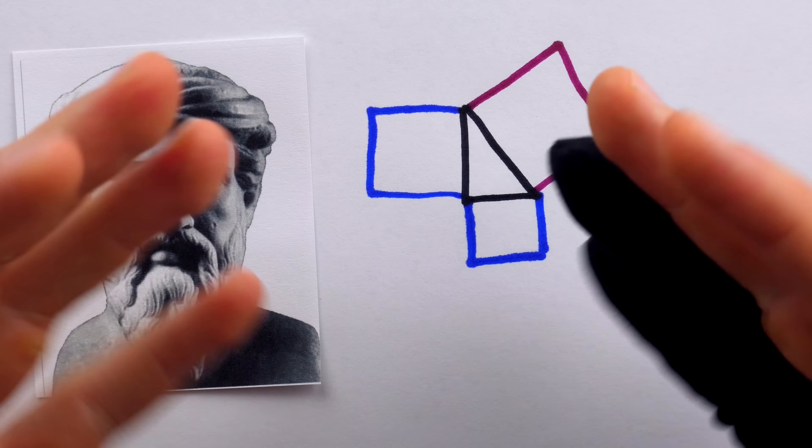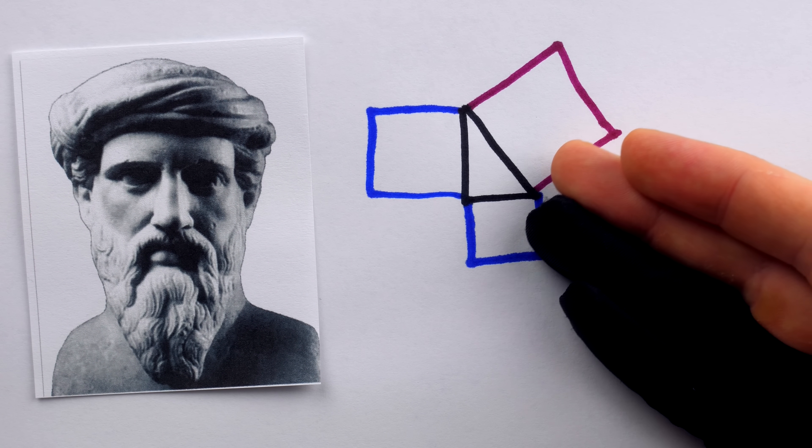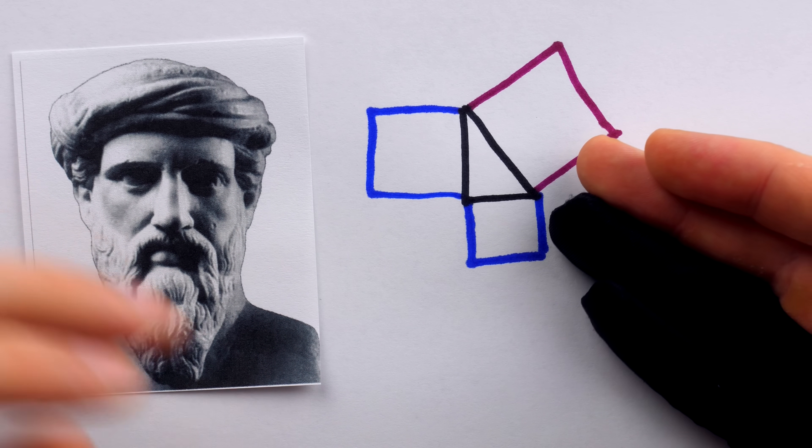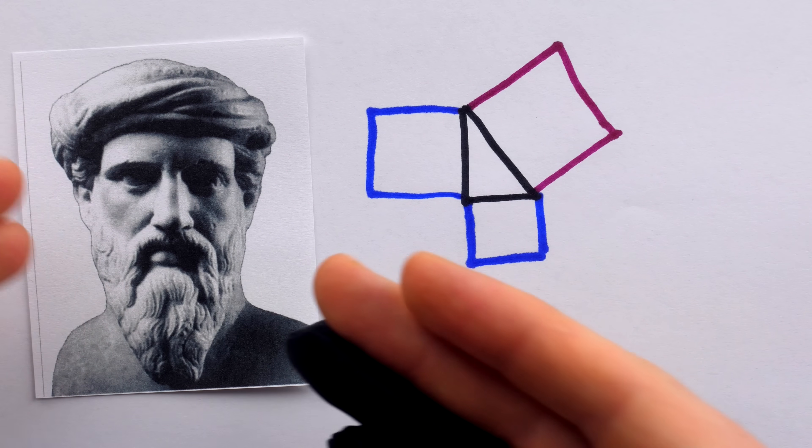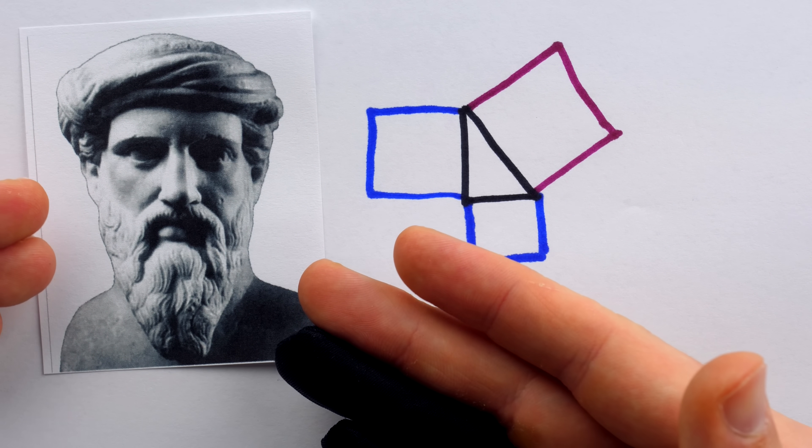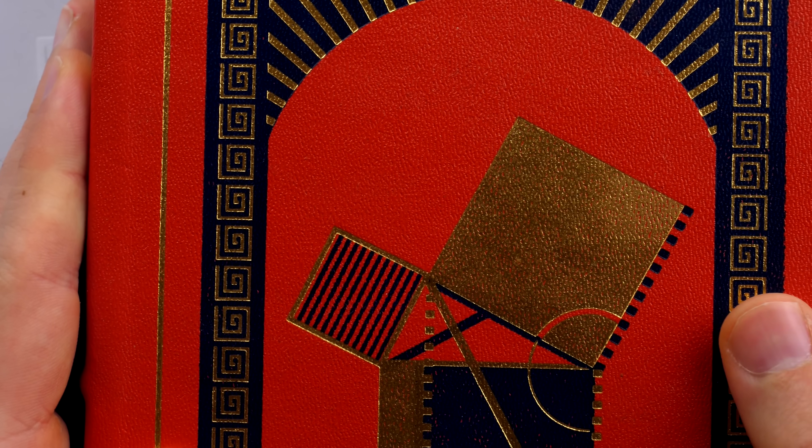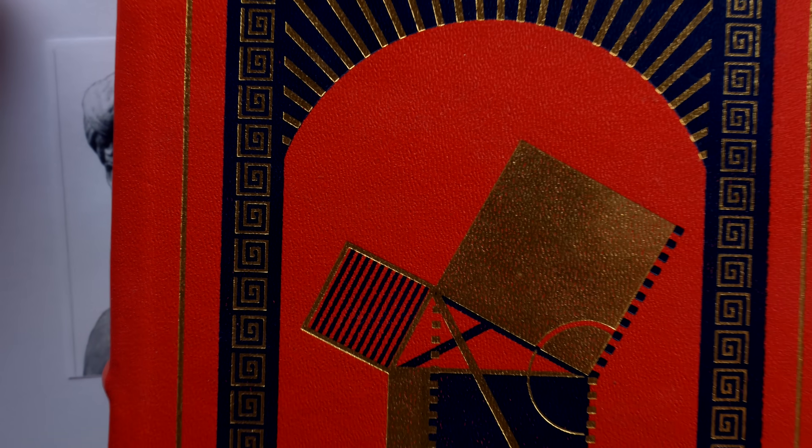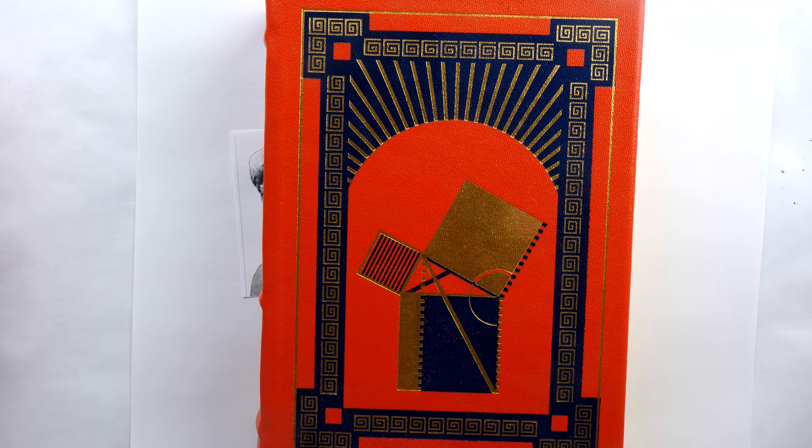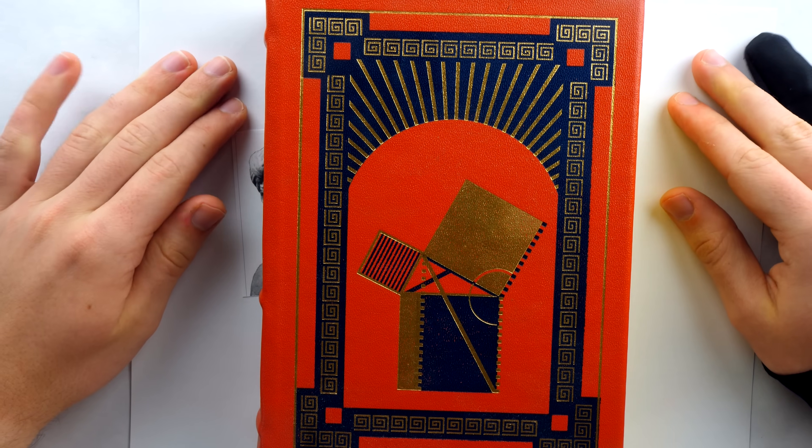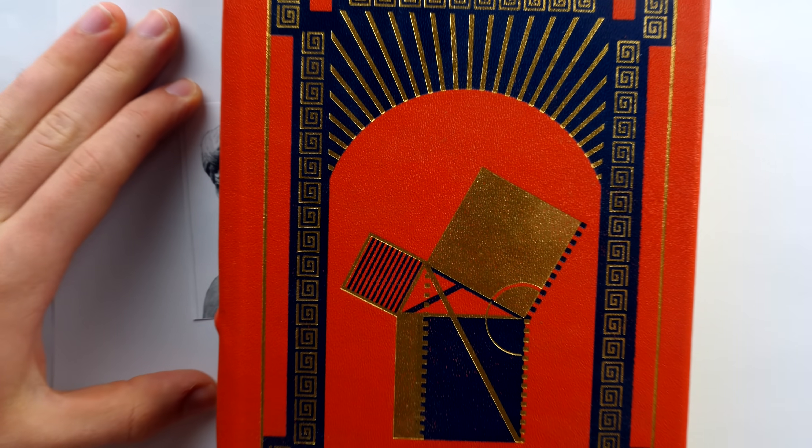And in a geometry class, students will typically learn not just the theorem, but also how to prove it. Interestingly, we don't know how Pythagoras proved it, or in fact, if he proved it at all. But we do know how Euclid proved it in his legendary textbook, The Elements. I don't even have to open the book to show you the proof, because the method is shown on the cover.